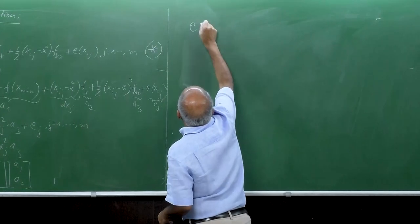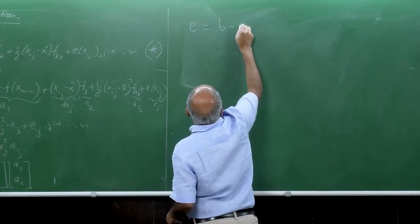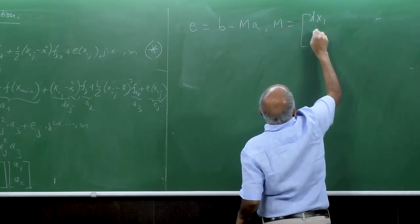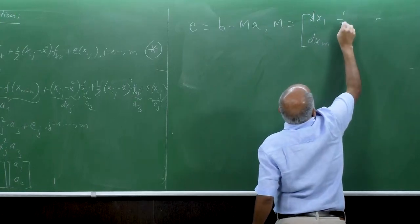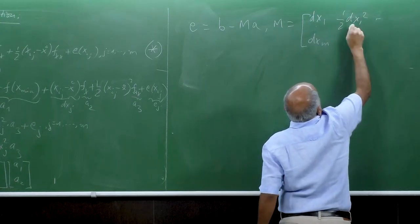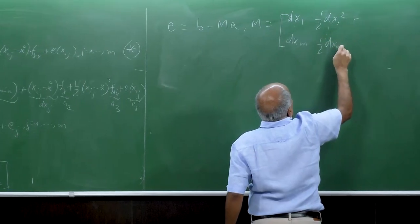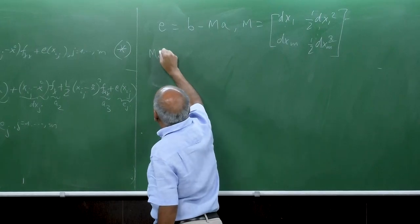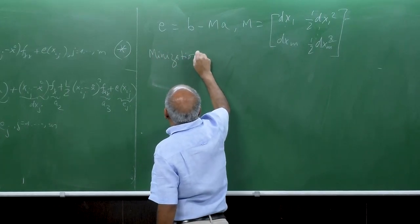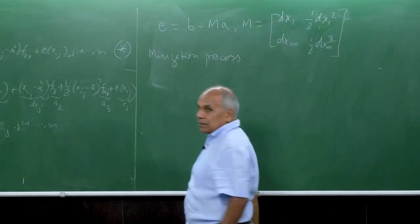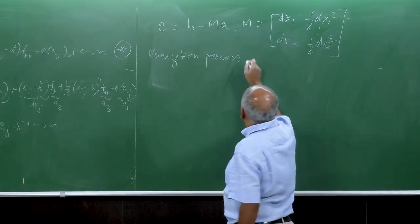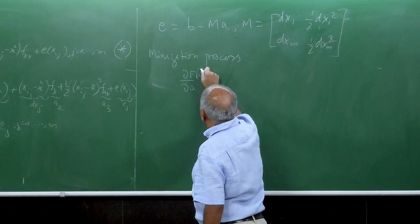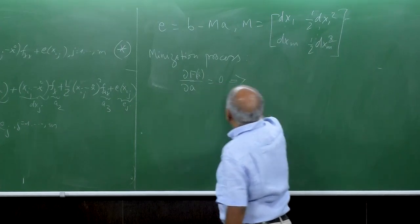So our V_j is equal to A1 plus DX_j times A2 plus half DX_j squared times A3 plus E_j, for J running from 1 to M. If we bring it to the left hand side, our E_j is equal to V_j minus A1 minus DX_j A2 minus half DX_j squared A3. Written in vector form: E = V minus M·A, where M is our geometric matrix with columns [1, DX_1, ..., DX_m; half DX_1^2, ..., half DX_m^2].